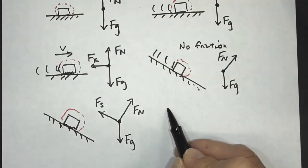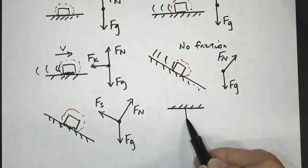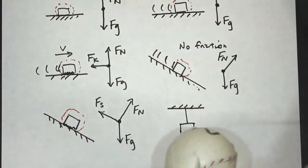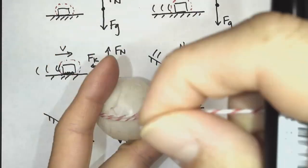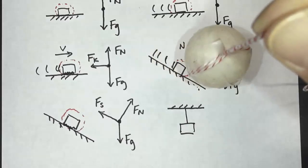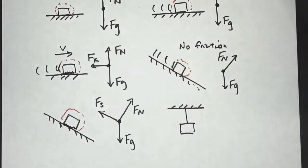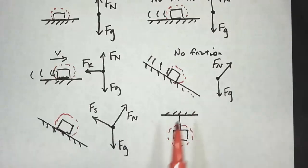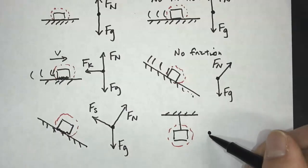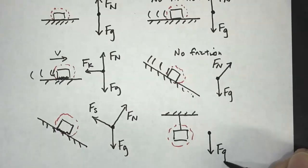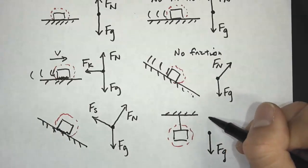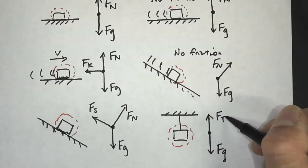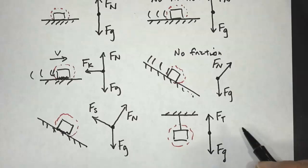Next, we have a string connected to an object. I have a ping pong ball and a string here, and I'm holding on to that string. You can see that the string is pulling the ping pong ball up. We can draw our system boundary, and our gravitational force is down. Our tension force is going to be along the string — as long as the string is taut, there's going to be a tension force in that direction.